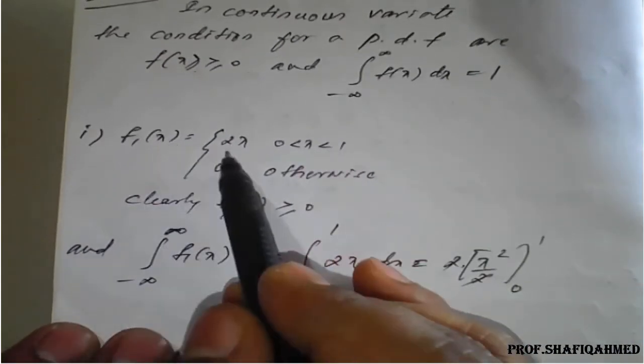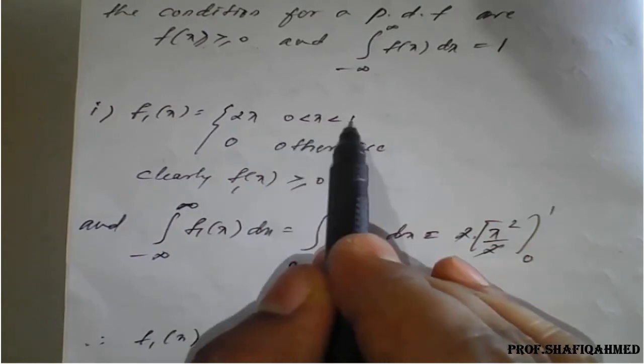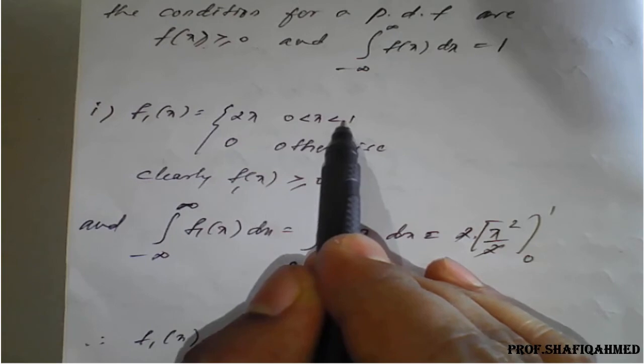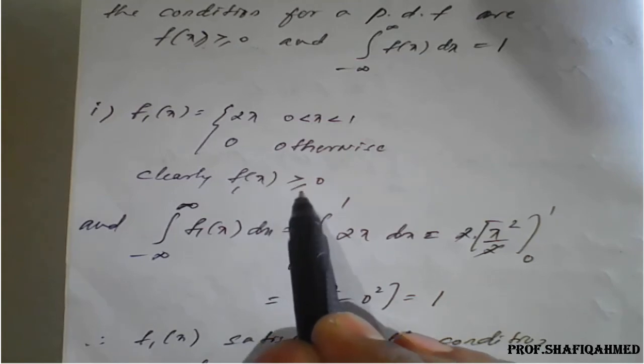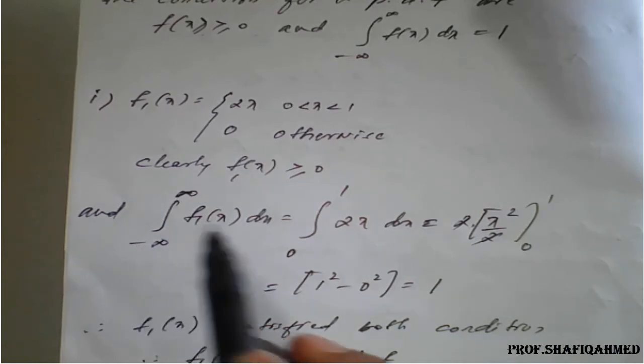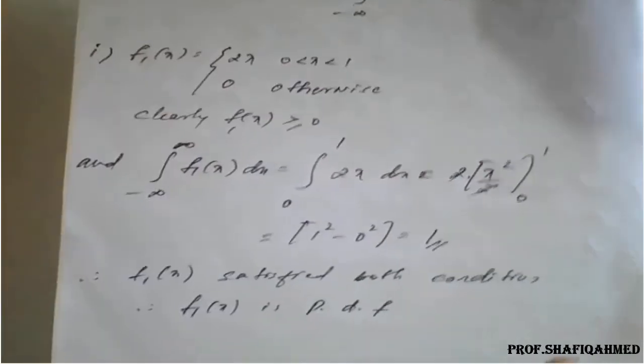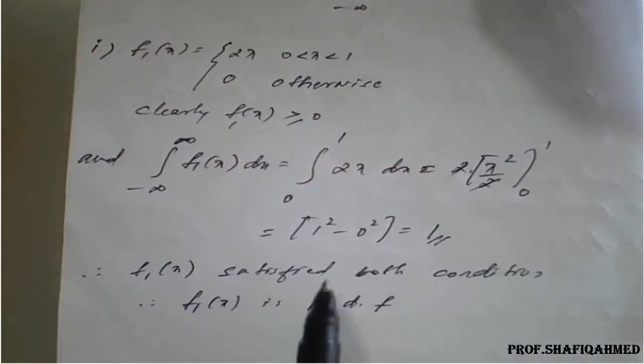First question: f1(x) is given by 2x where x lies between 0 and 1, and 0 otherwise. Clearly, since x ranges from 0 to 1, both are positive. So f1(x) is greater than or equal to 0 — the first condition is satisfied. For the second condition, the integral from minus infinity to plus infinity of f1(x) dx with range 0 to 1 simplifies to 1. Both conditions are satisfied, so it is a probability density function.